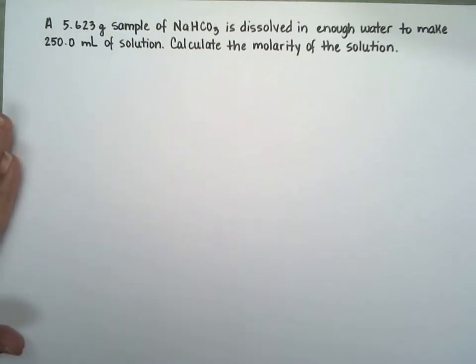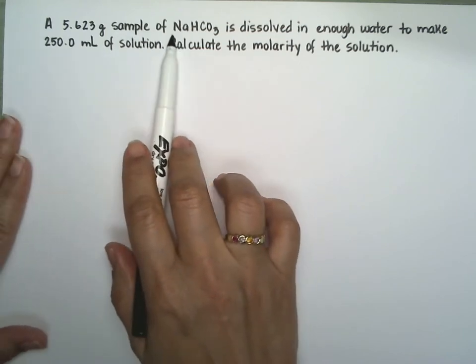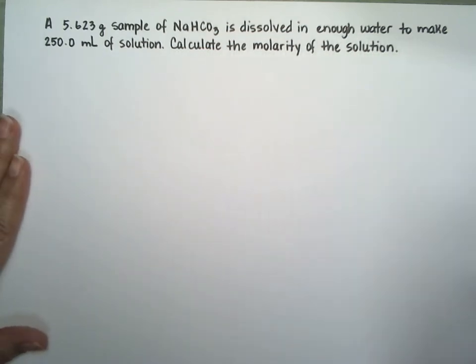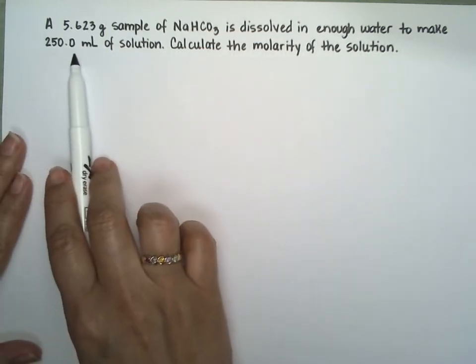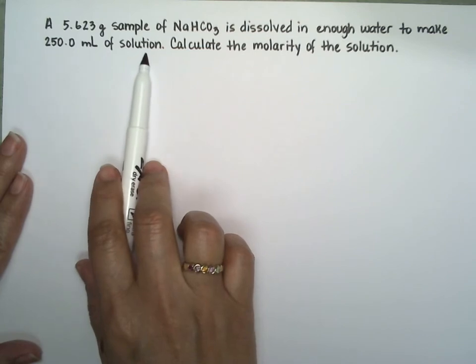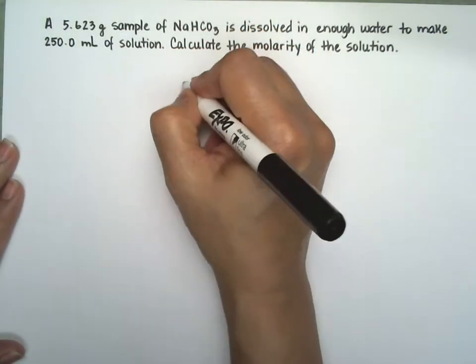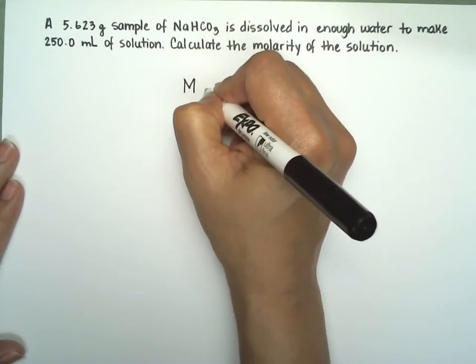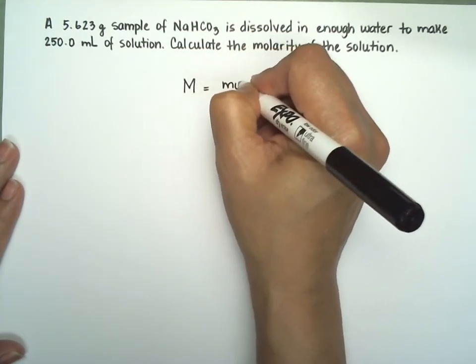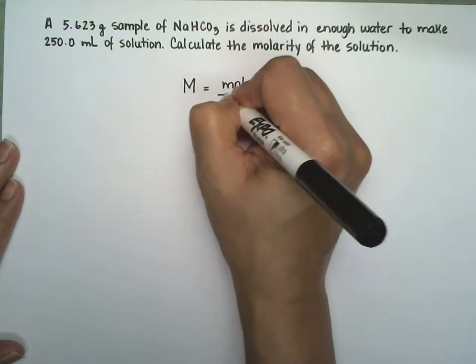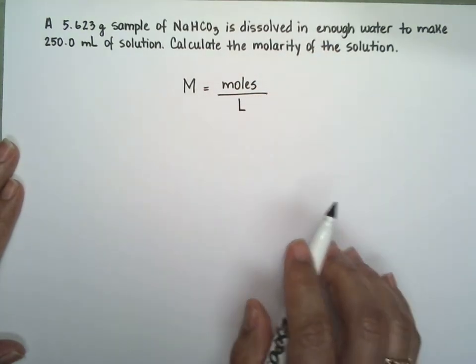This is a molarity problem. We have a sample of sodium bicarbonate dissolved in enough water to make 250 milliliters of solution. We're going to calculate the molarity of the solution. So it would be useful to remember that molarity is the moles of solute over the liters of solution.